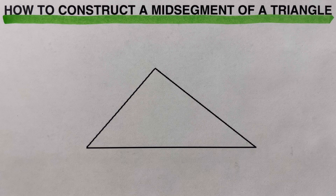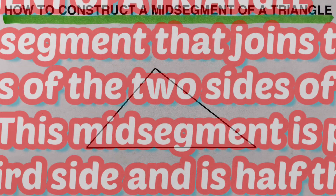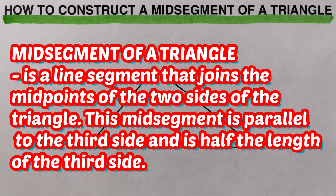Before we go over the steps on how to construct a mid-segment of a triangle, we remember that the mid-segment of a triangle is a line segment that joins the mid-points of the two sides of a triangle. And this mid-segment is parallel to the third side — the one that is not used — and it is half the length of the third side.